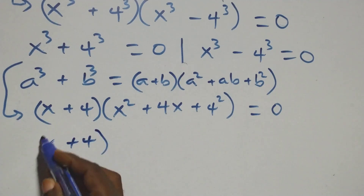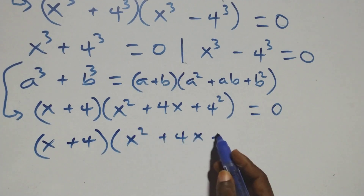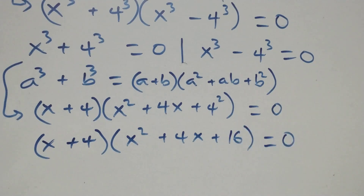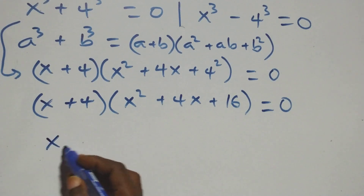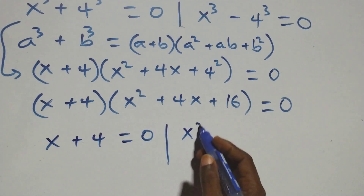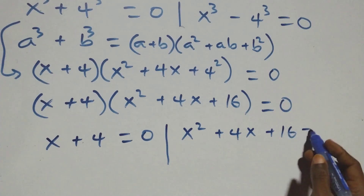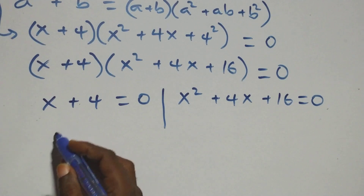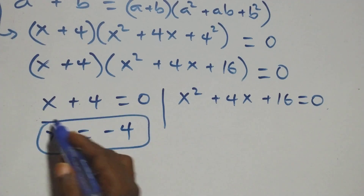So we have x plus 4 into open brackets x squared plus 4x plus 4 squared, that is 16, close bracket equals to 0. Here we have two possible cases: x plus 4 equals to 0, or we have x squared plus 4x plus 16 equals to 0. Solving the first sub-case, we have x equals to minus 4, which is a real solution.